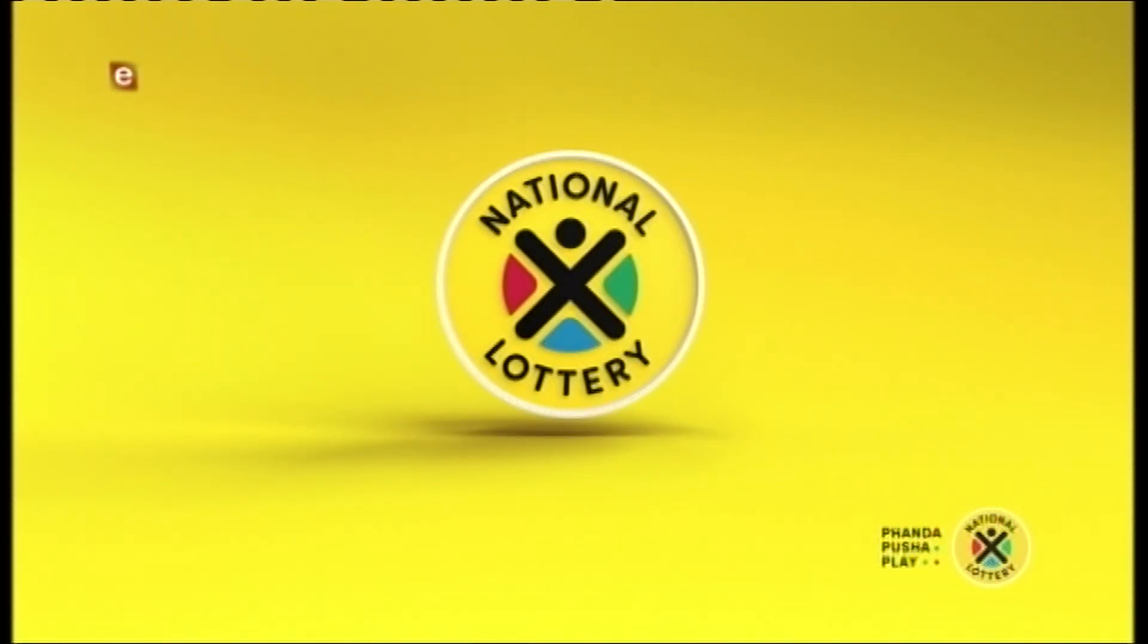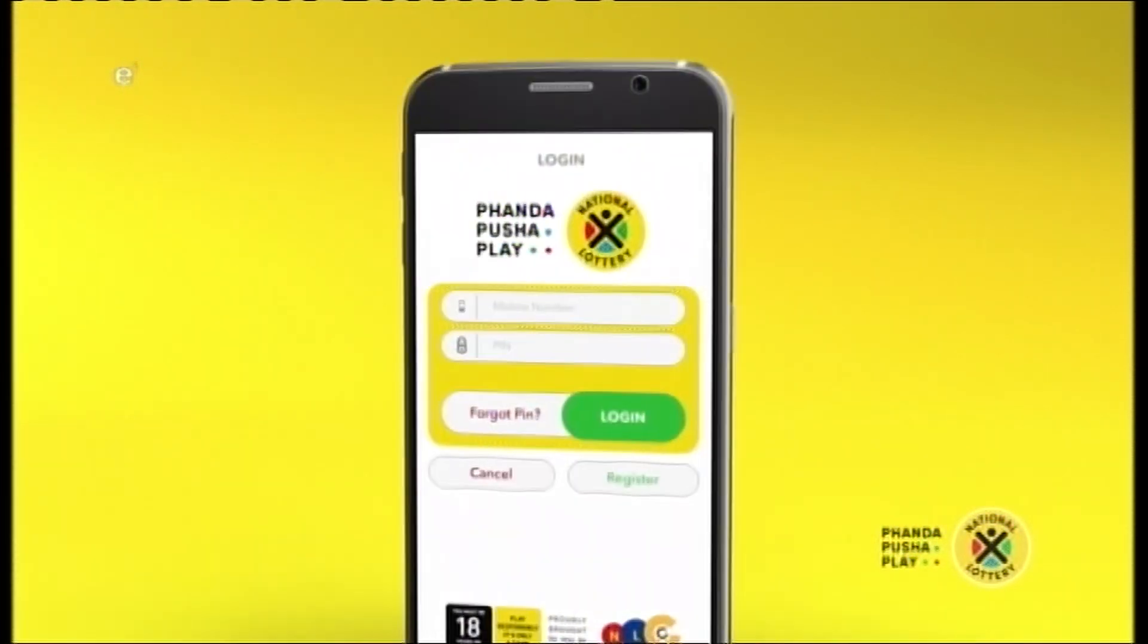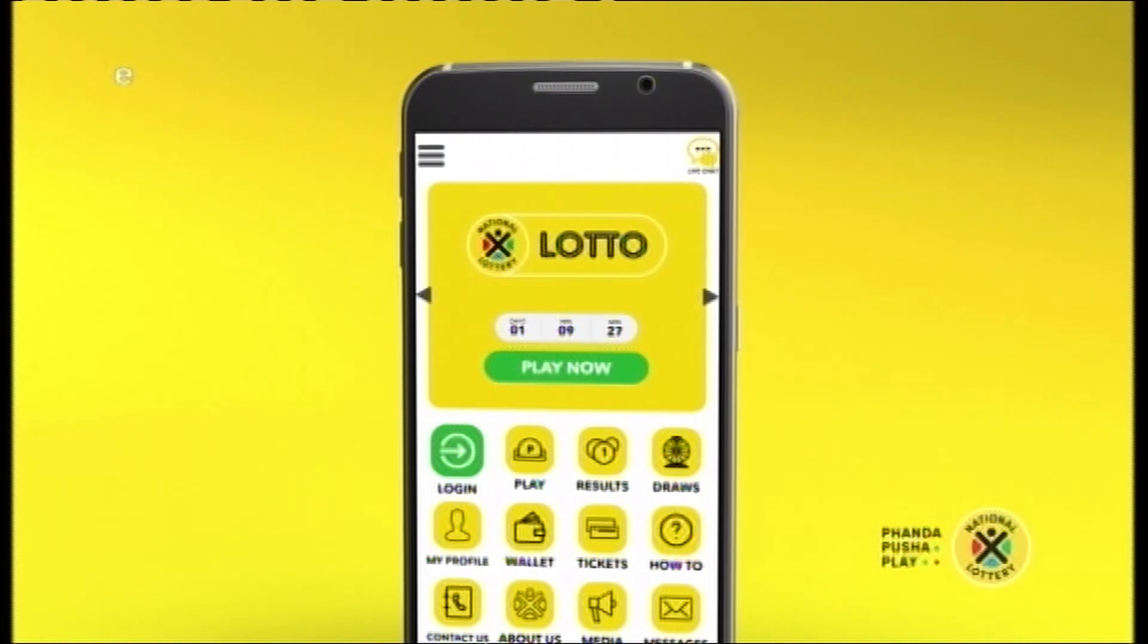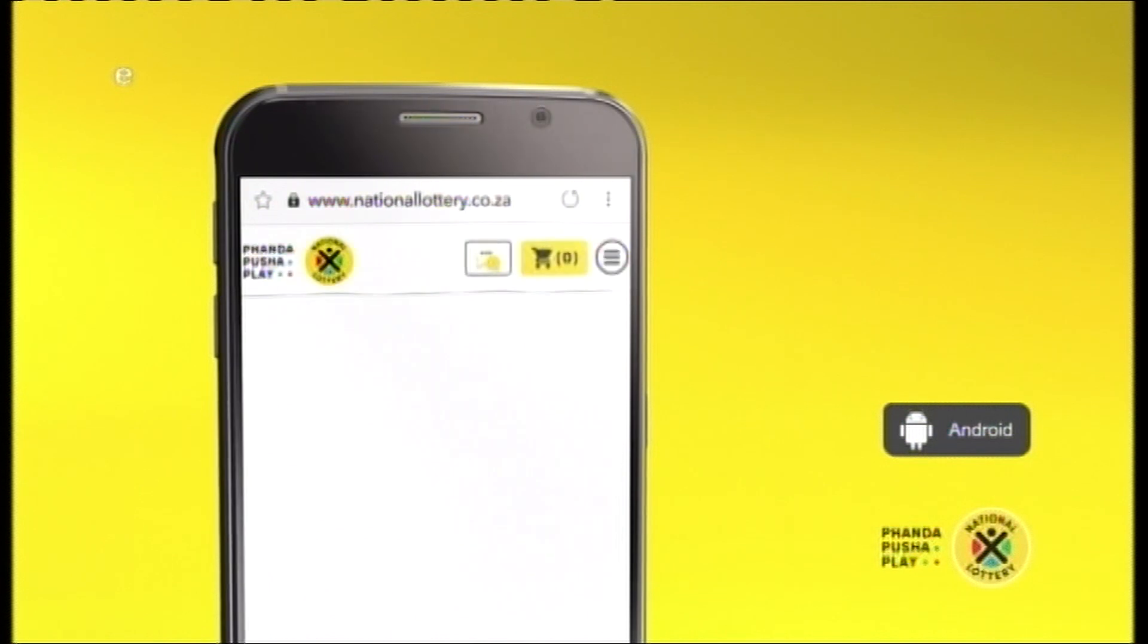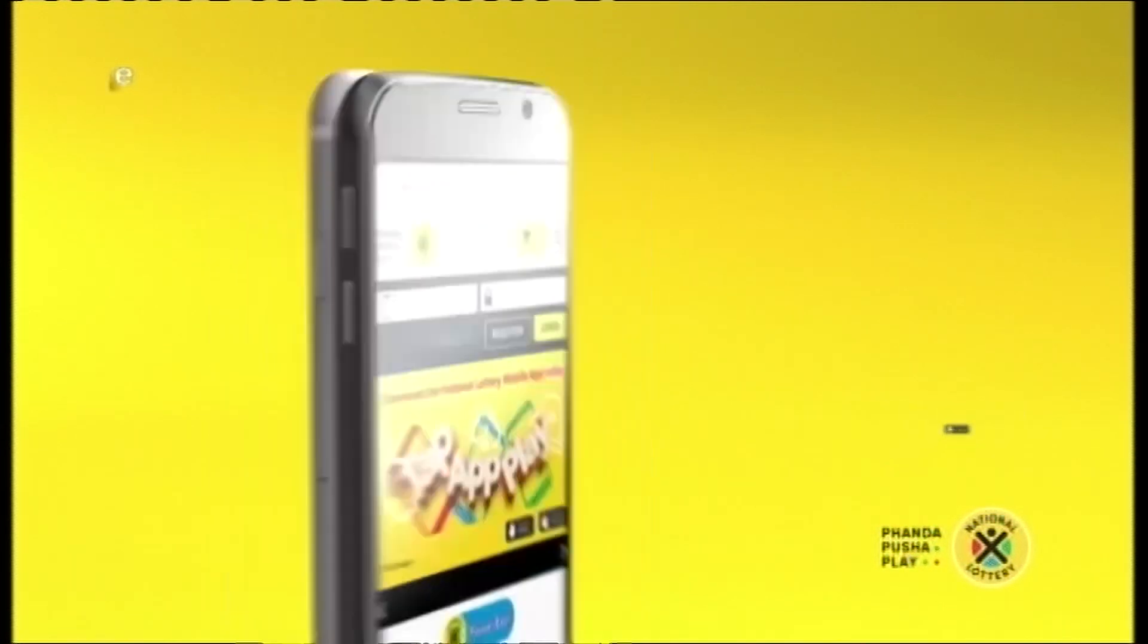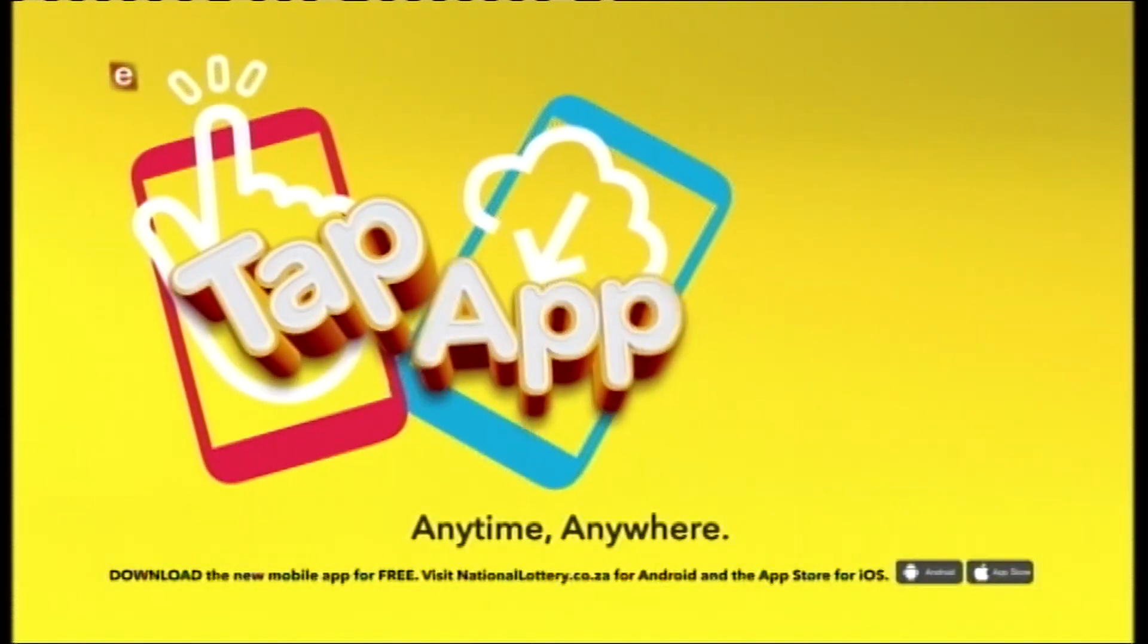Now you can play the National Lottery anytime, anywhere on your mobile phone. Download the new mobile app for free. Visit nationallottery.co.za for Android and the App Store for iOS. Tap. App. Play.